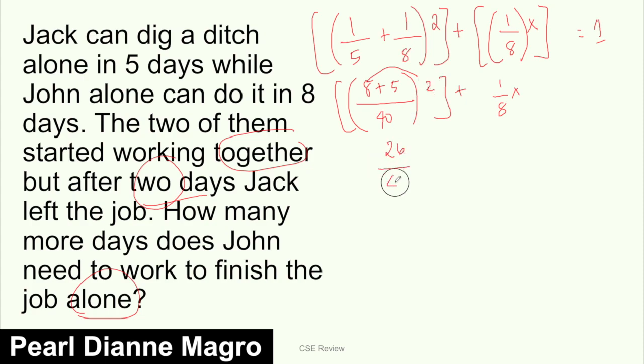For me, it's a safe bet to put parentheses around everything so you don't get confused. It's just easier that way. If you have these and don't put parentheses, you might make a mistake in what to do first. So here first, the LCD of 5 and 8 is 40. So 40 divided by 5 is 8 times 1 plus 5, that's what I'm solving, times 2. Then you have plus 1/8X or X over 8. And this, we solve the same way as before. 8 plus 5 is 13 times 2, that's on top. So 26/40 plus X/8 equals 1.